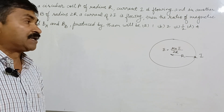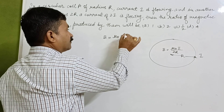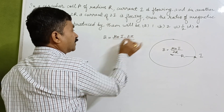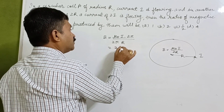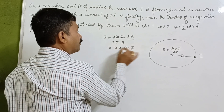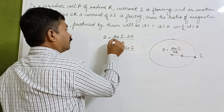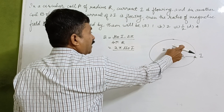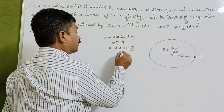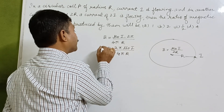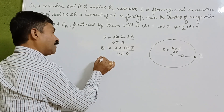This formula is applicable here. If we multiply and divide by 2π, we get B = 2π μ₀i / 4πr. This is the working relation we will use to find the magnetic field at the center of each coil.